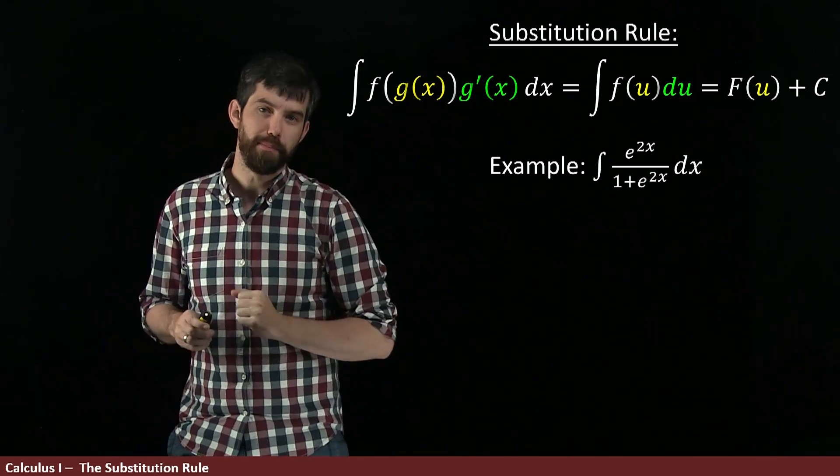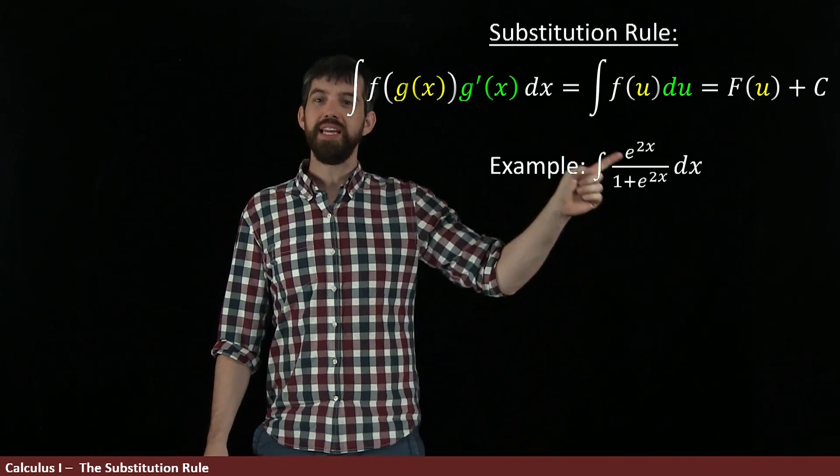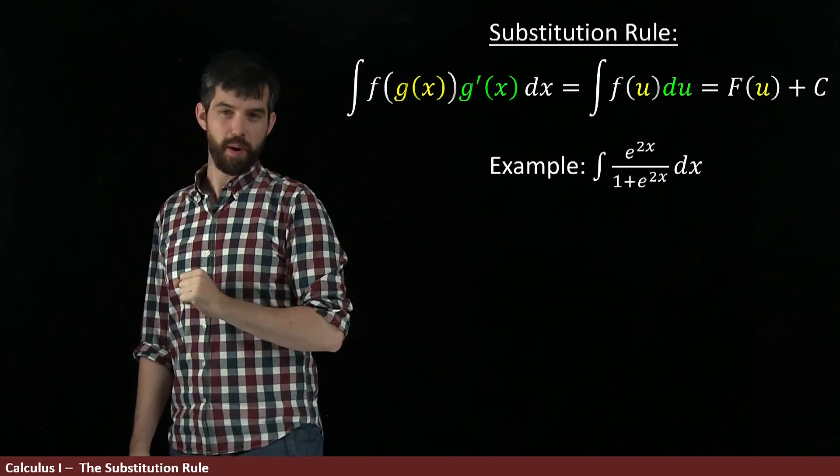All right, let's do one more example. What we have here is the integral of e to the 2x on the top all divided by 1 plus e to the 2x on the bottom.